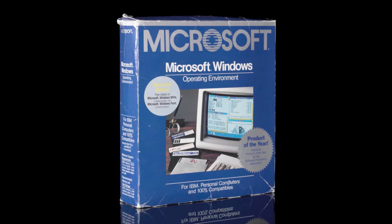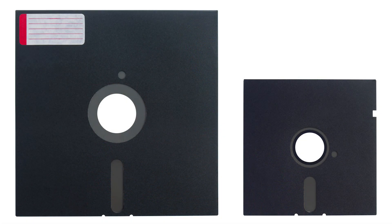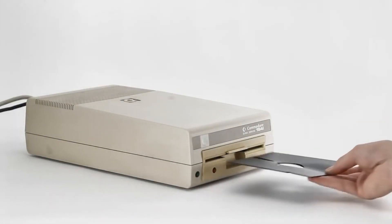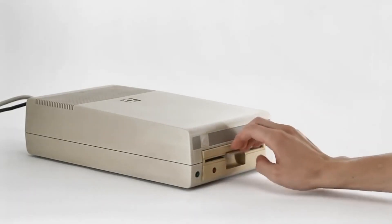Installation media are used to distribute physical copies of Windows. In 1985, Microsoft released Windows 1, which was distributed on 5.25 inch floppy disks. This type of disk was the second generation of the original 8 inch floppy disk, named after its physical flexibility, originally invented by IBM in the late 1960s.